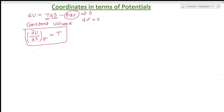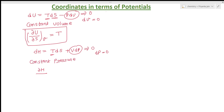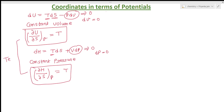Similarly, using dh equals tds plus vdp — if we want to find temperature, the vdp term should be zero, which occurs when dp equals zero, i.e., at constant pressure. So del h over del s at constant pressure equals temperature. These two equations give us temperature in terms of the potentials. You can also use the trick.